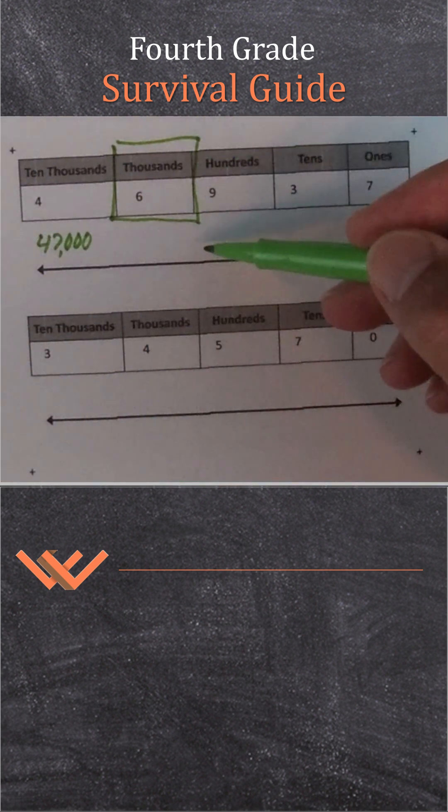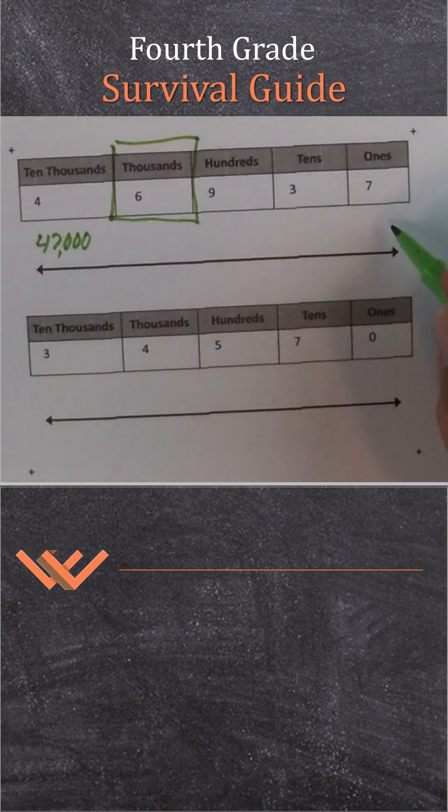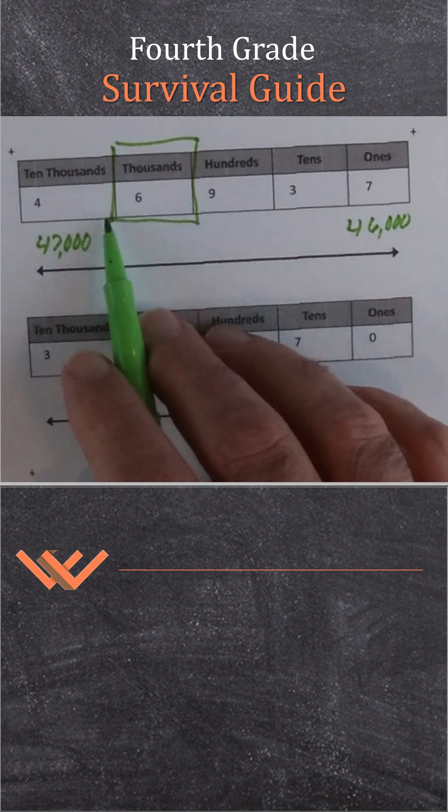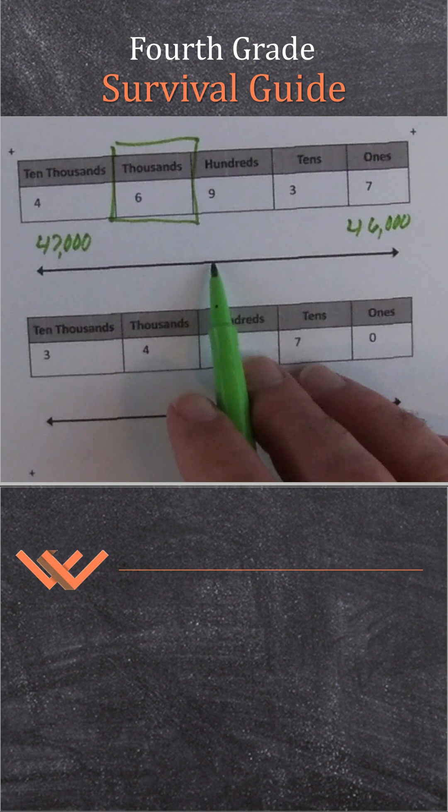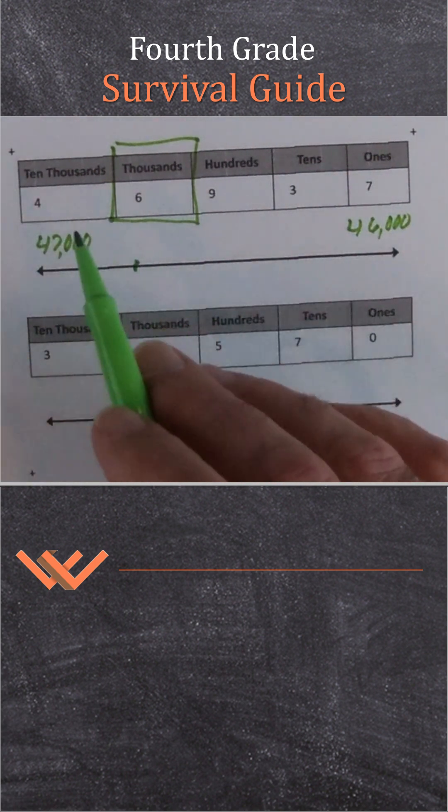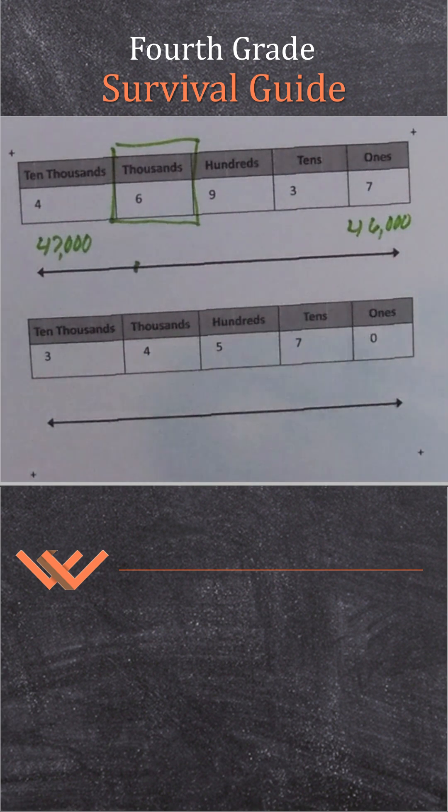And the one down lower than this is going to be 46,000. I can look at that and go, wait a minute. It's 46. It's a little bit more than halfway. So I'm going to put it almost 47,000. Let's put it over here. And I want to round it. I want to see what's going on.